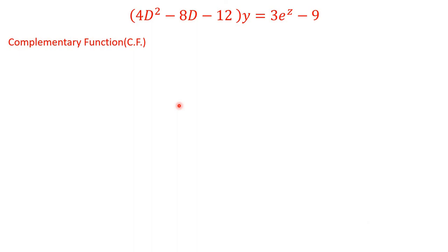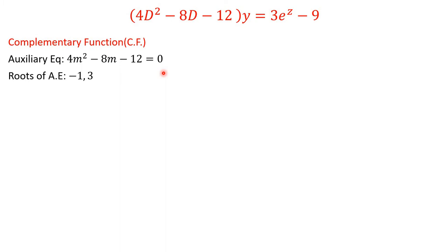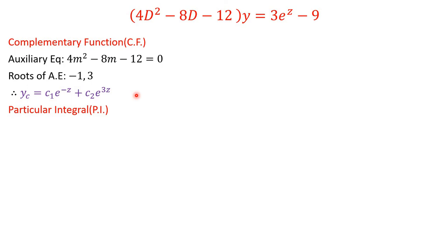Now let's solve this. First, we find the complementary function. The auxiliary equation is 4m² − 8m − 12 = 0, whose roots are m = −1 and m = 3. Therefore the complementary function is y_c = c₁e^(−z) + c₂e^(3z). Be careful: the independent variable is now z, not x — a common mistake is to write x here.